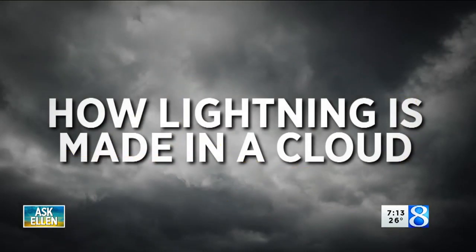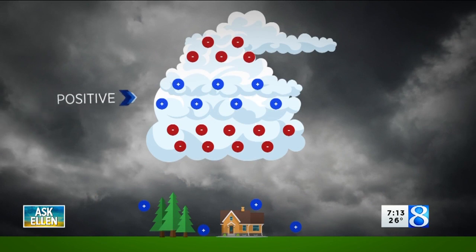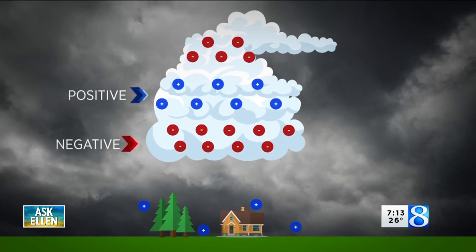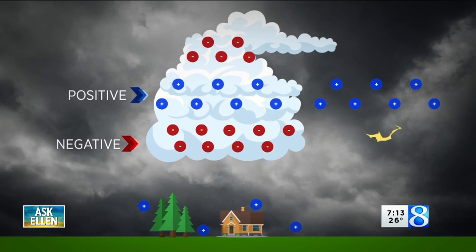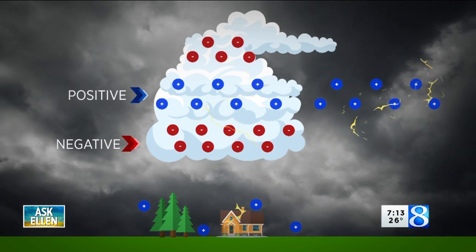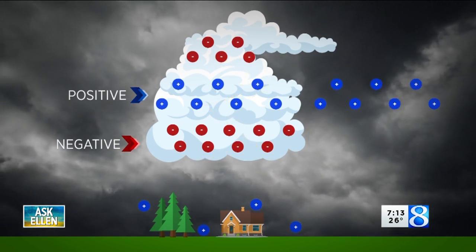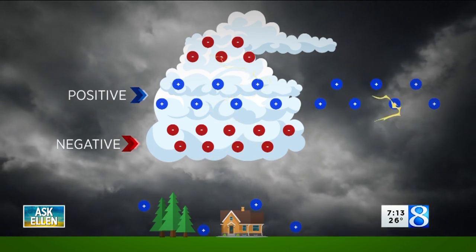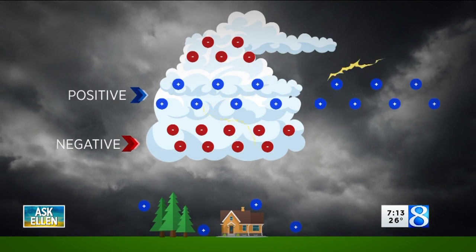So lightning is looking for more and more of those charges so that it can equalize. If you get a nice batch of different charged particles around the cloud or in the cloud, the lightning will look for those spots to strike. It's all driven by these invisible things that we can't even spot — the bolt is just looking for positive charges to link up. And when it gets strong enough, that lightning bolt will strike.